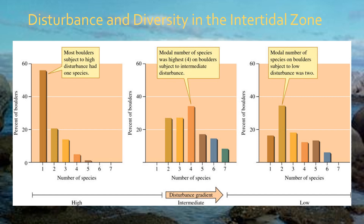Sousa's data shows three graphs ranging from high disturbance (small boulders) to low disturbance (large boulders), with intermediate boulders in the middle. The y-axis shows the percent of boulders with different numbers of species. On the small, highly disturbed boulders, the highest percentage had only one species — very few had four or five species, and none had six or seven — showing only one species could withstand high disturbance.